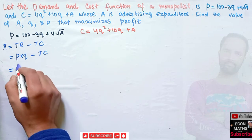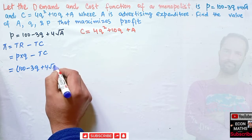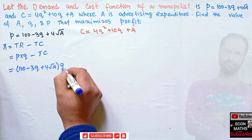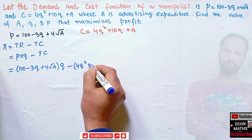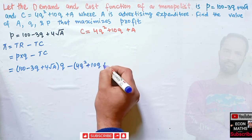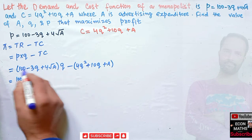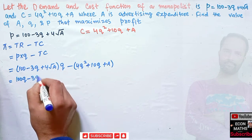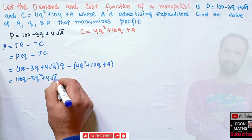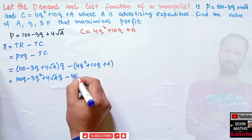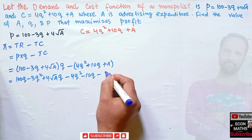P is given as 100 − 3Q + 4√A, which is our inverse demand function. We multiply this by Q, then subtract the total cost function: 4Q² + 10Q + A. Rearranging: 100Q — this Q will be multiplied to each term — minus 3Q·Q = 3Q², plus 4√A·Q, minus 4Q², minus 10Q, minus A.